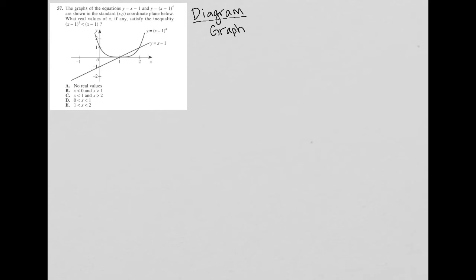So we're dealing with an inequality here. The X minus 1 to the 4th, that's the parabola. So if we want that to be less than X minus 1, that only occurs here.